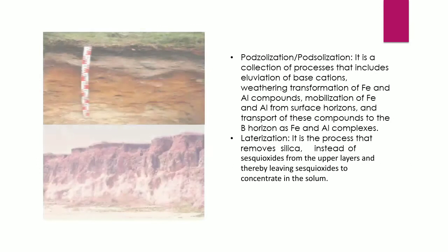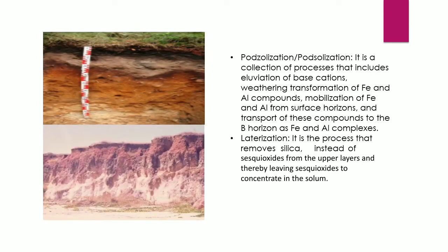Podzolization is the eluviation of basic ions and occurs in the E horizon. In the case of podzolization, iron and aluminum compounds are eluviated and accumulate in the B horizon as iron and aluminum complexes. Laterization is the removal of silica instead of sesquioxides.